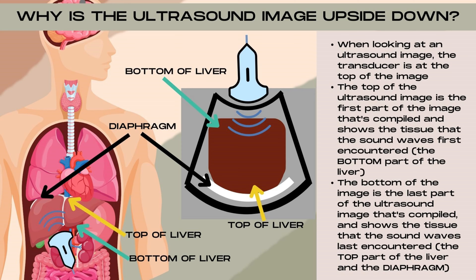So the top portion of the image shows the bottom portion of the liver, since that's where the sound waves first started. The sound waves then traveled up through the liver to the top portion and where the diaphragm is — and that's also reflected in this ultrasound image. The sound waves travel all the way through the liver and hit the top portion of the liver where the diaphragm is.